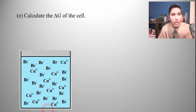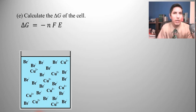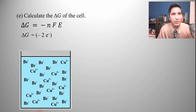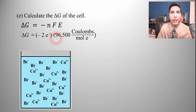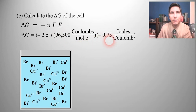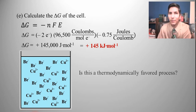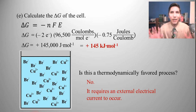Part E: calculate the delta G of the cell using delta G equals negative NFE. We cancelled out two electrons, so N equals 2. F is Faraday's constant, 96,500 coulombs per mole of electrons. The E cell was negative 0.75 volts. Doing the math, delta G equals positive 145,000 joules per mole, or positive 145 kilojoules per mole. Since it's positive, this is not a thermodynamically favored process — electrolytic cells always require an external power source, so they're never spontaneous.